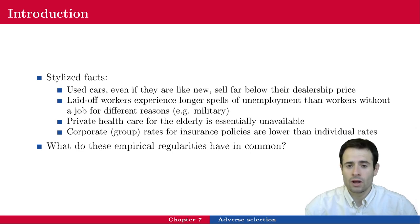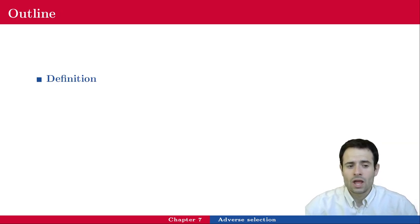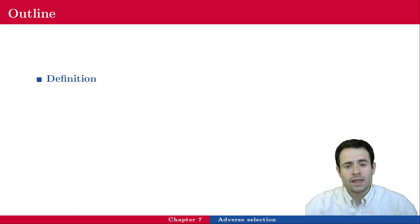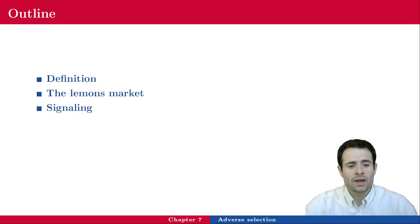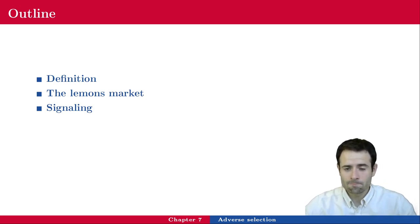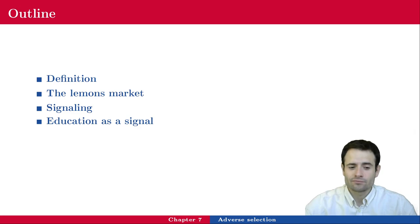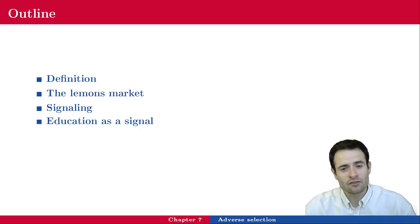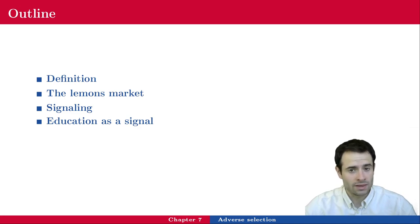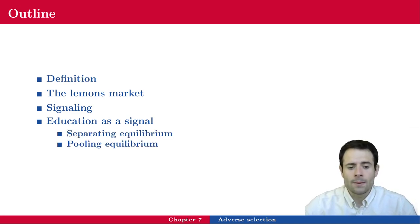Let me show you the outline for this lecture. First, I will go over the definition of adverse selection. Then I will illustrate this phenomenon in the very first model that was used to study adverse selection — the lemons market. After making a summary of the general result, I will go into the case of signaling, illustrated by the first model of signaling: education as a signal. In particular, I will talk about two specific types of equilibria — a separating equilibrium and a pooling equilibrium.